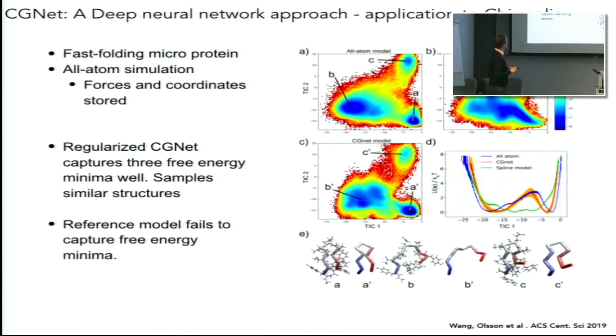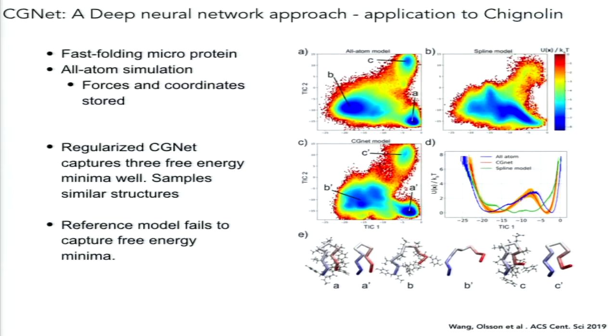To show an example with a small fast folding protein again, if we see this free energy surface here in the all-atom model we see that there are three major free energy minima. If we don't take into account the multi-body interactions using a traditional approach to force matching, we arrive at a free energy surface which captures the general configuration of states but doesn't capture the cooperative nature of the folding process. We don't get the right free energy barriers and we don't get quantitative agreement. However, if we use this neural network approach we accurately capture the barriers and the minima as well as the structures.